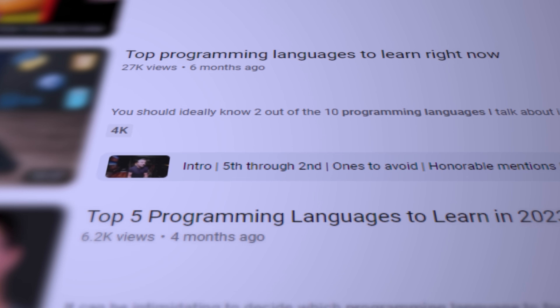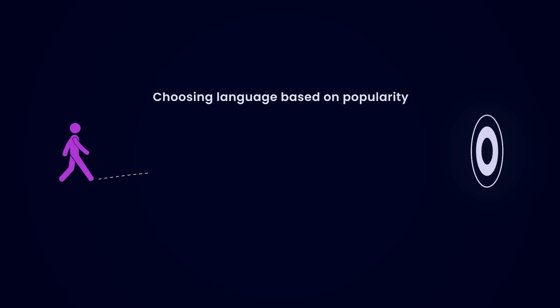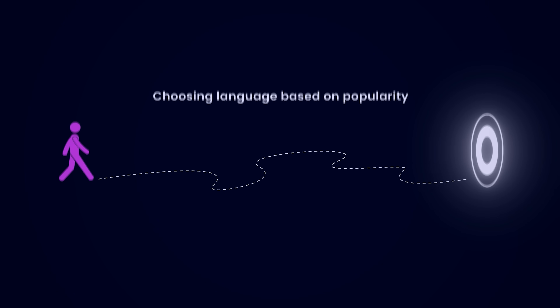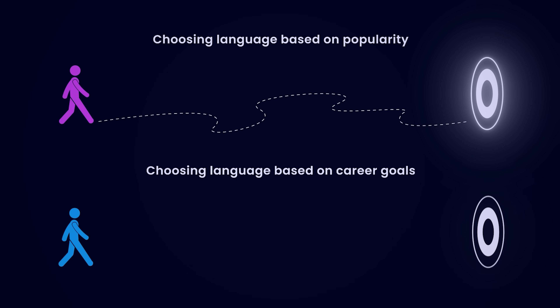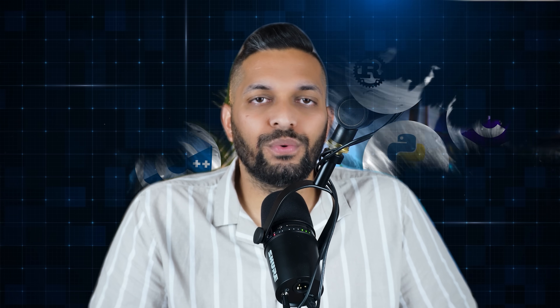Every year we are bombarded with countless videos about top 5 programming languages to learn. But choosing a programming language solely based on what's popular is like blindly picking a path without knowing where it leads. You might eventually reach your goals, but it would take you much longer than if you took the right path from the beginning. Picking a programming language based on your interests and career goals will help you reach them much faster. Today, I want to tell you which programming language you should learn based on the job you want.